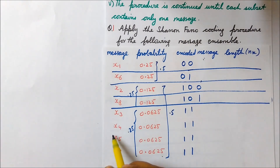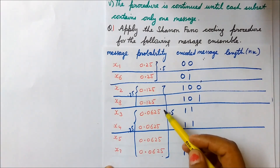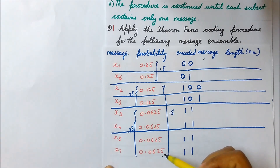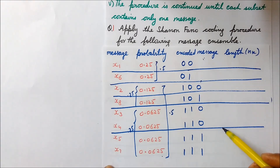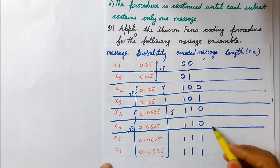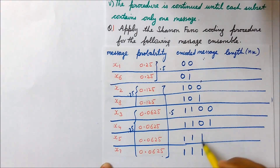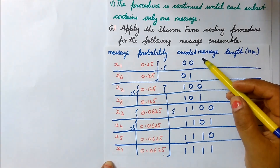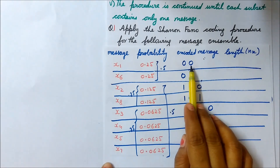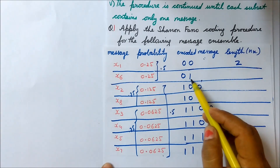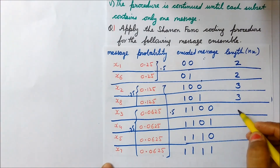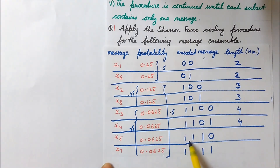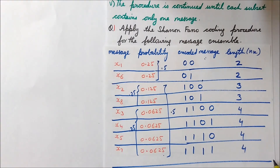Further dividing: x2 and x8 are split into single elements with a partitioning line — above the line 0, below the line 1. For the group x3 to x7, all have equal probabilities. I divide into x3 and x4 as one group, and x5 and x7 as another — adding their probabilities gives equal values. A partitioning line is drawn, above 0 and below 1. Each of these is further split into single elements. Final encoded codes: x1=00, x6=01, x2=100, x8=101, x3=1100, x4=1101, x5=1110, x7=1111 with code lengths 2, 2, 3, 3, 4, 4, 4, 4 respectively.